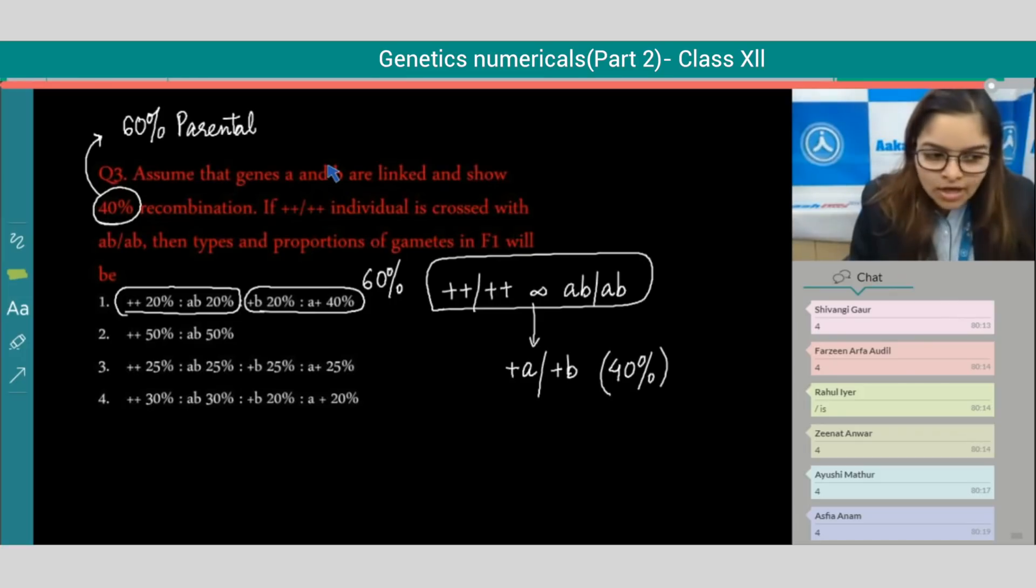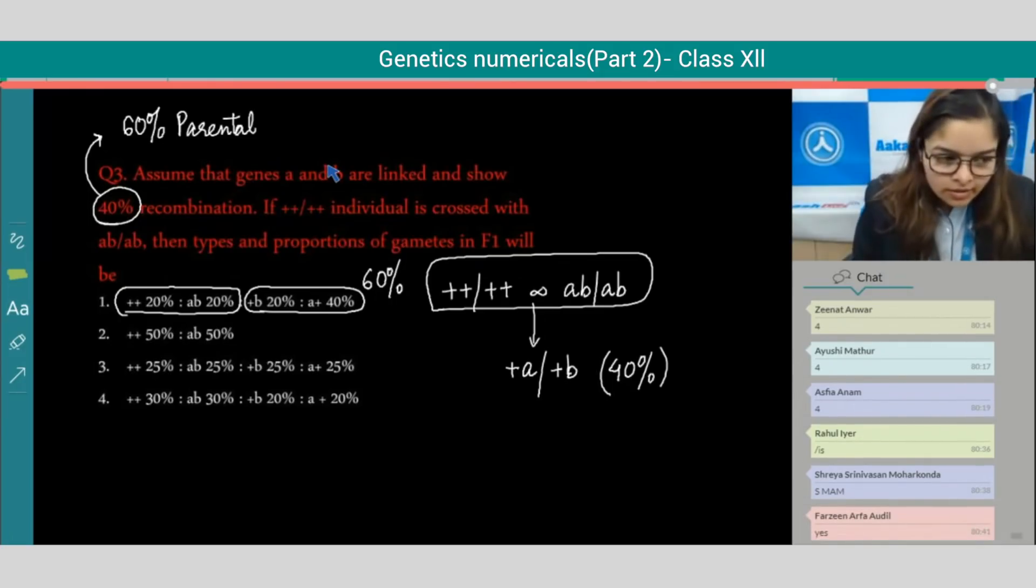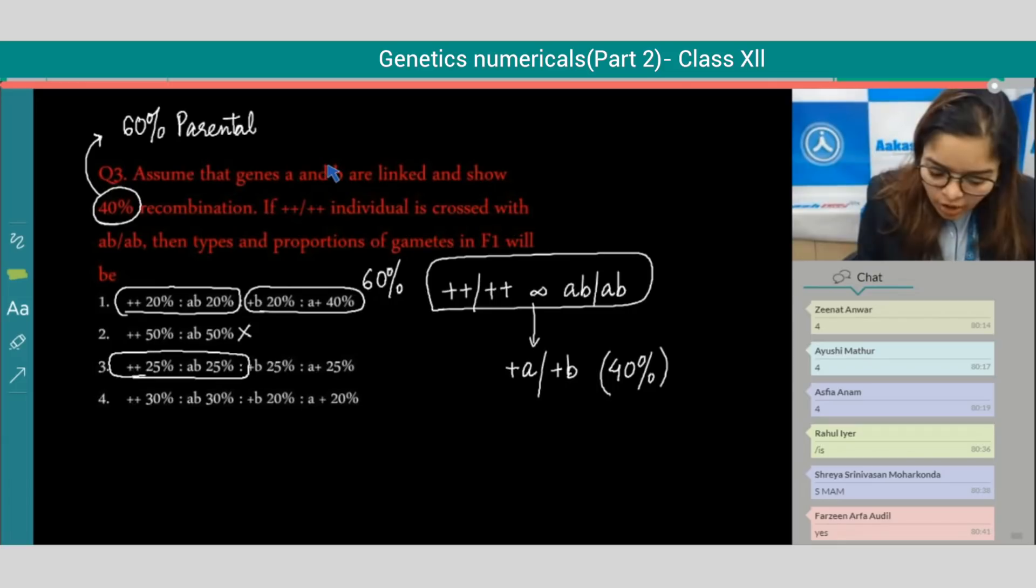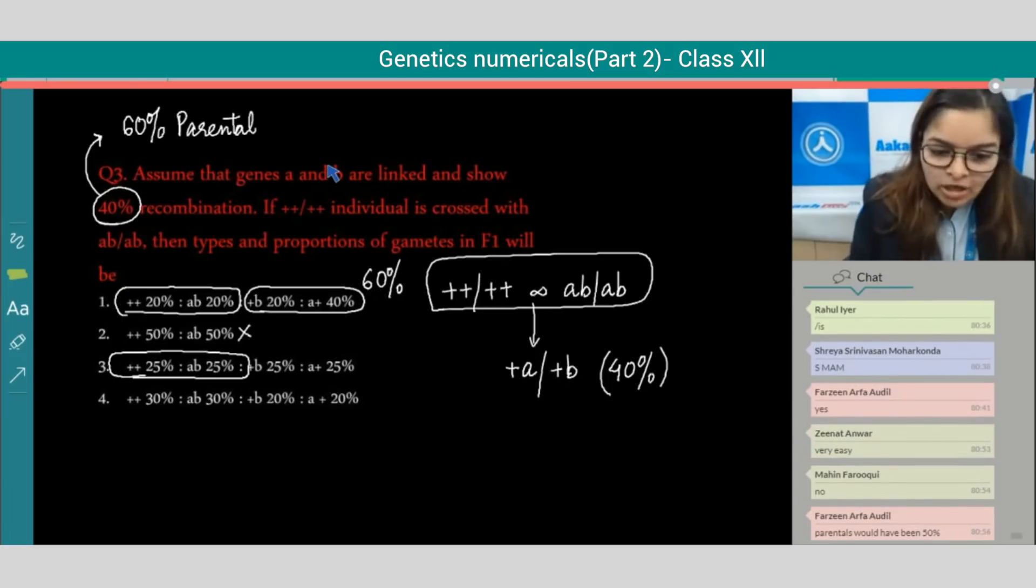Shrey, are you getting this question? The second is also incorrect because this is giving us the 50 and 50 percent combination. Coming to the third option, 25 percent, 25 percent means the parentals combination is providing 50 percent and 50 by the recombinants - again wrong.